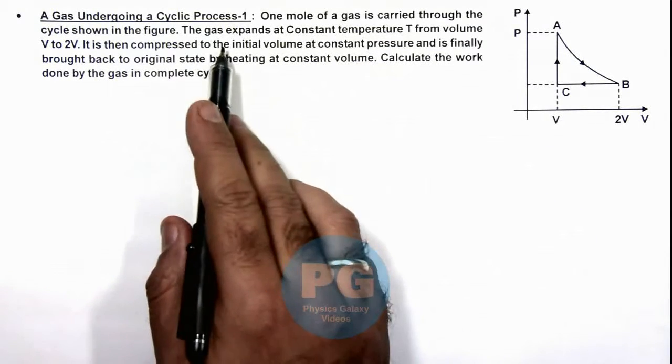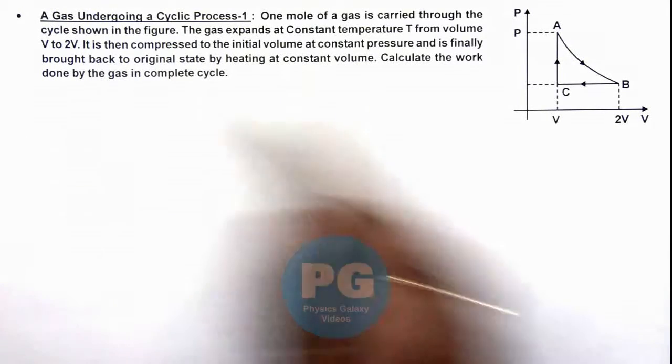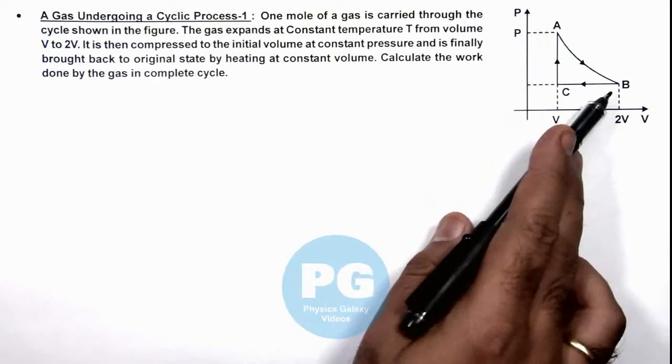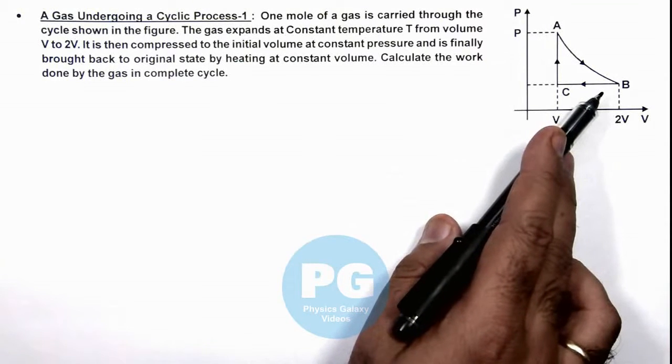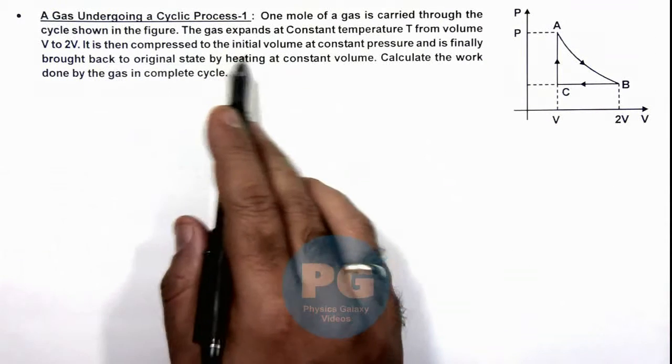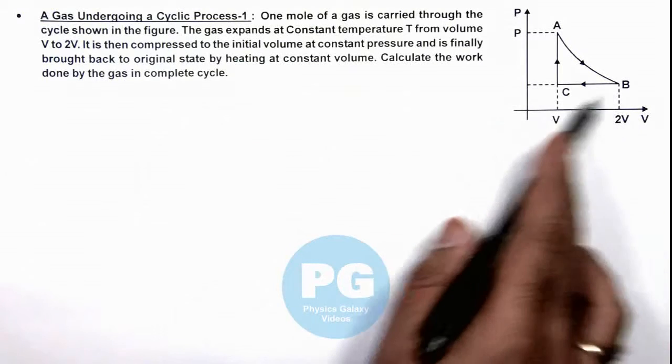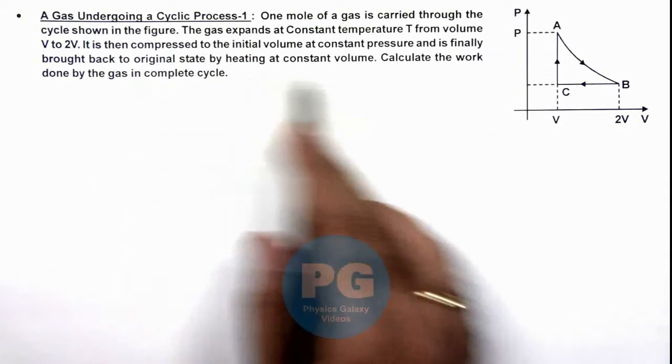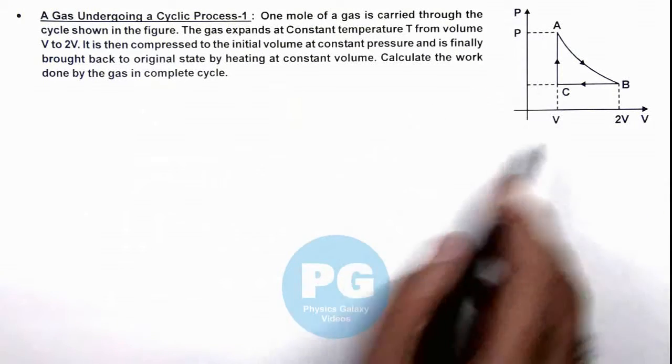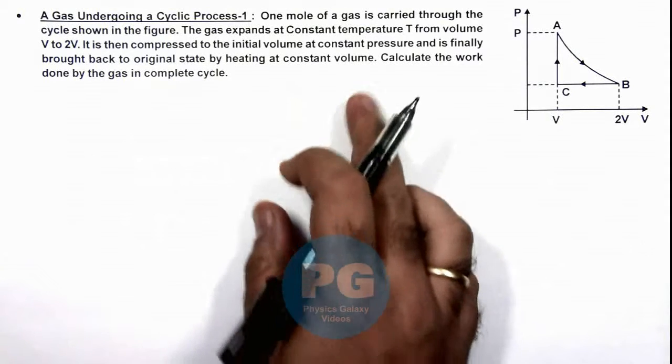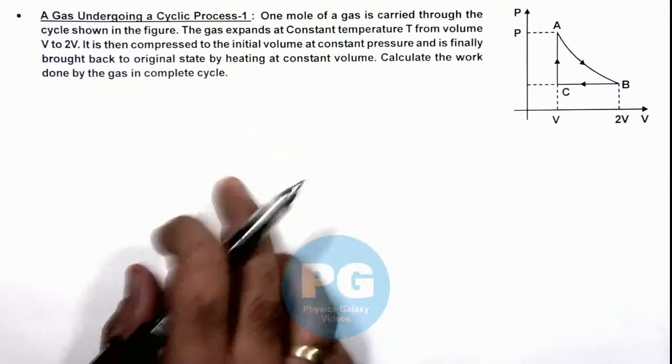The gas expands at constant temperature T from volume V to 2V. This process is isothermal. It is then compressed to the initial volume at constant pressure and finally brought back to the original state by heating at constant volume. We are required to calculate the work done by the gas in the complete cycle.